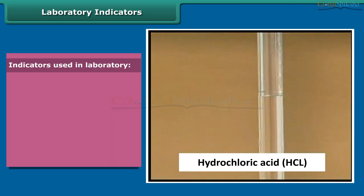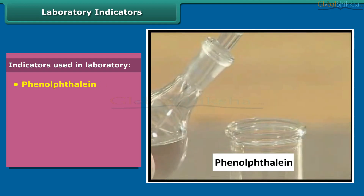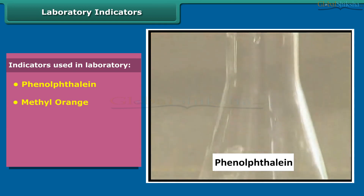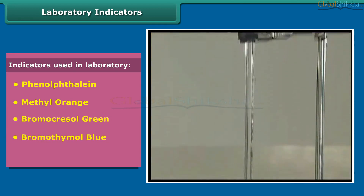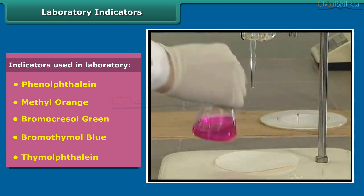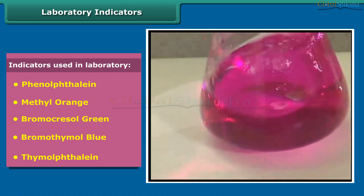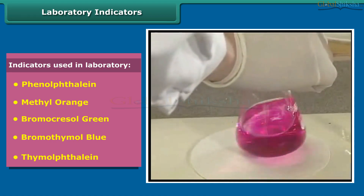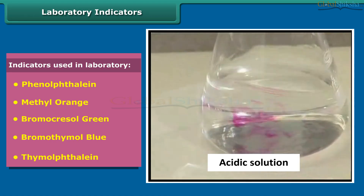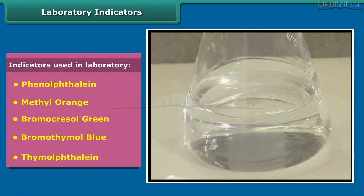Let us perform a simple experiment. Take some hydrochloric acid in a beaker, then add some phenolphthalein to it. Now add sodium hydroxide dropwise with continuous stirring. After some time, a pink color slowly appears in the solution. When more sodium hydroxide is added, the pink color becomes brighter. On adding a drop of hydrochloric acid, the solution again becomes colorless. So phenolphthalein appears pink in alkaline solution and colorless in acidic or neutral solution.